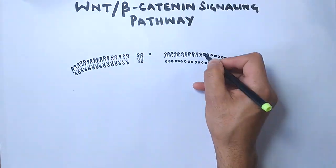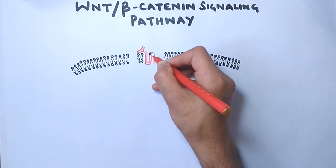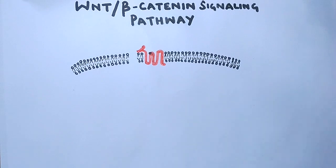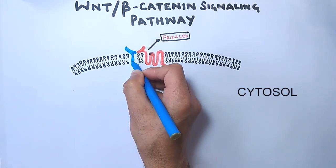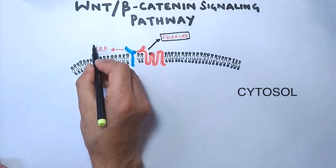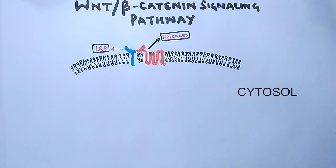This pathway consists of two transmembrane receptors. One is Frizzled, a G protein receptor shown in red color, and the other one is LRP receptor, lipoprotein receptor related protein, shown in blue color.